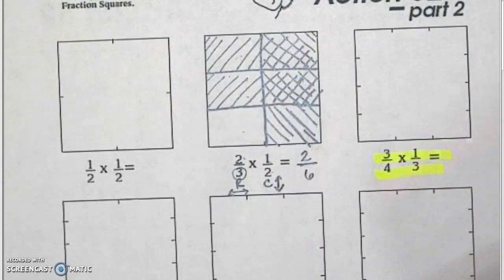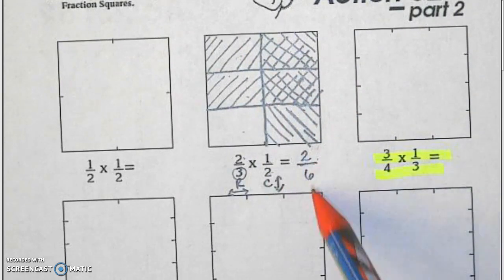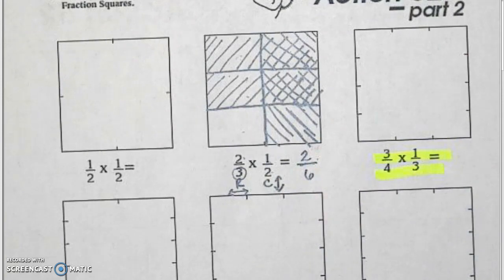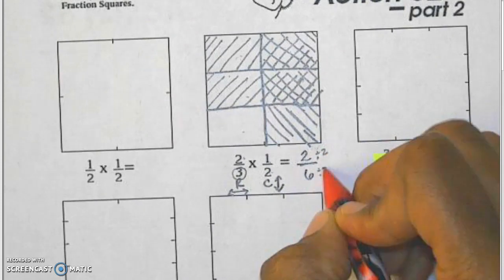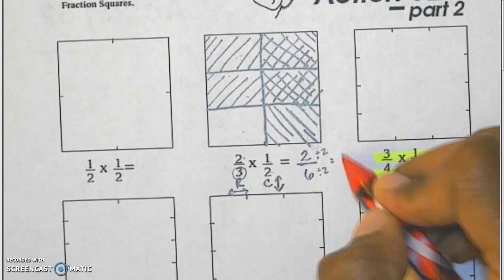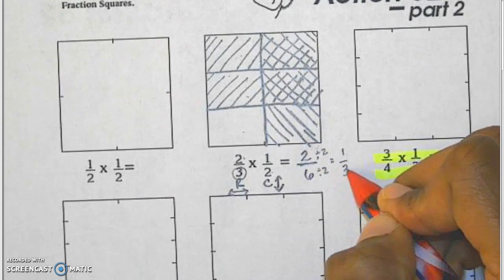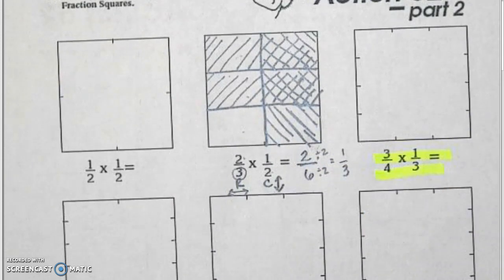So the answer to this problem would be two-sixths by using a model. And if you would like to simplify my GCF or greatest common factor would be two and I would have one-third as my simplified answer.